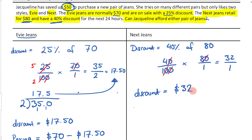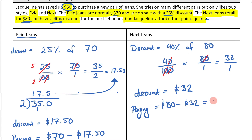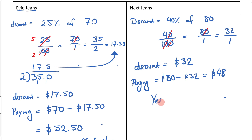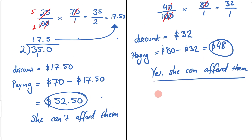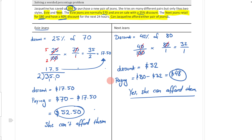That doesn't mean she's paying $32. They're originally $80 and she's getting a $32 discount. So what is 80 minus 32? It's going to be equal to $48. So can she afford these jeans? Yes, she can afford them, because it's only $48. They're $48 and the others were $52.50. So that's how you would approach this question. Hopefully that made sense.